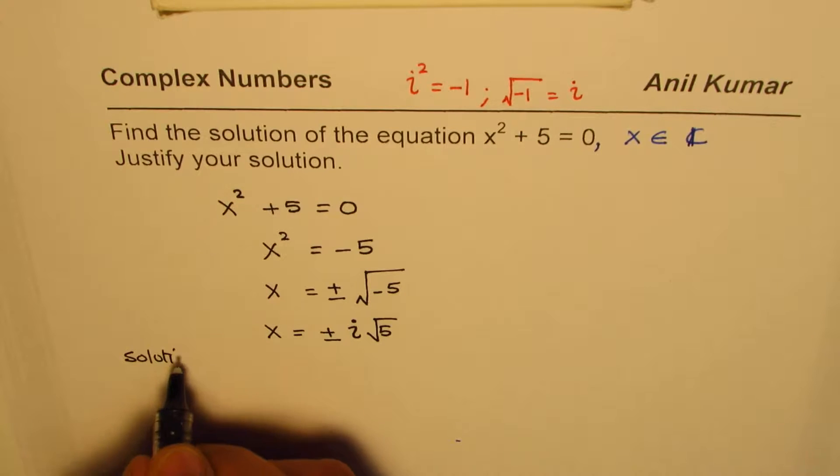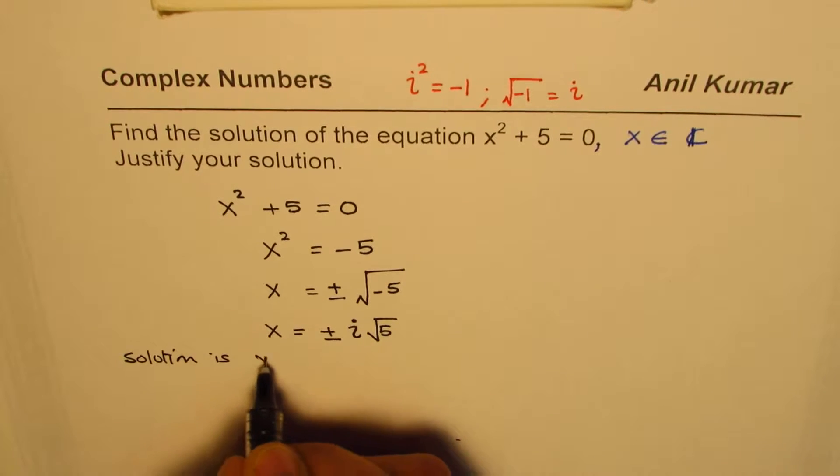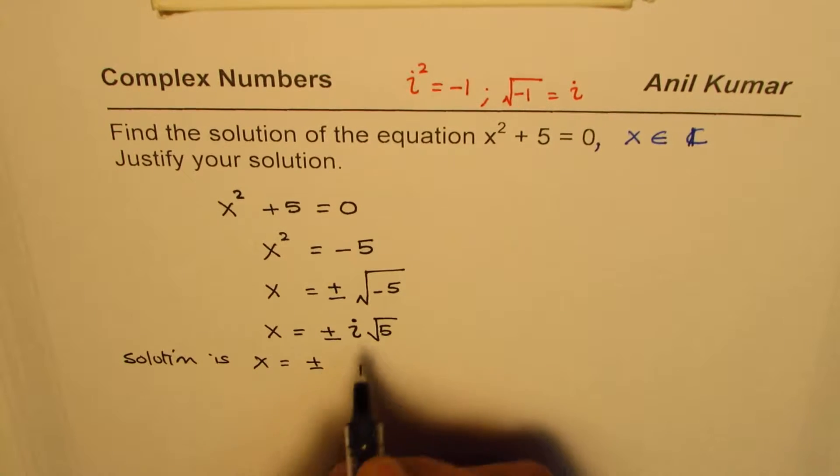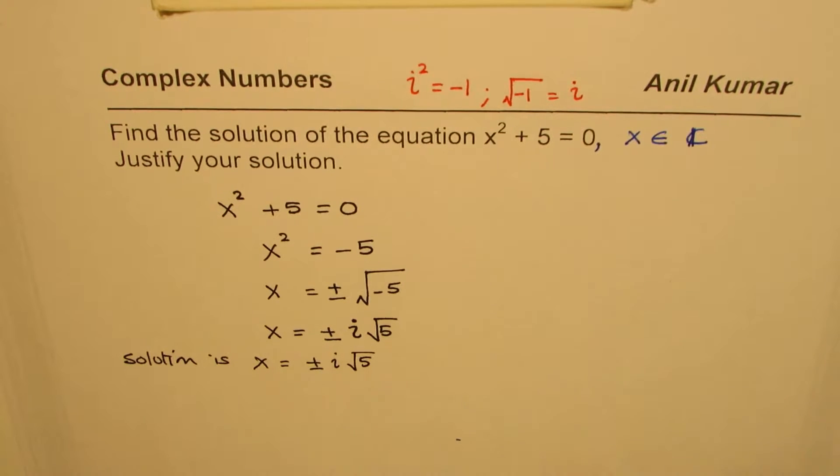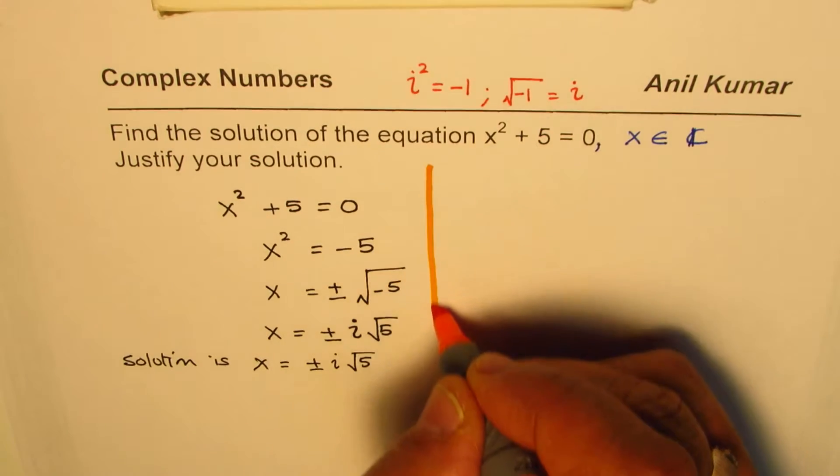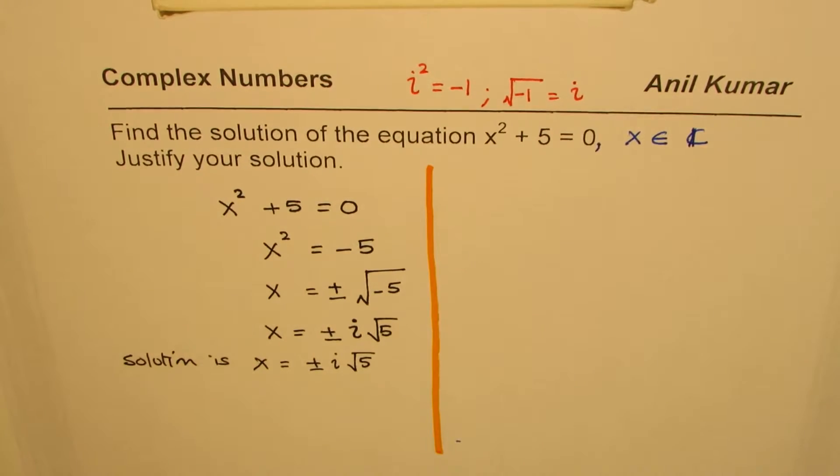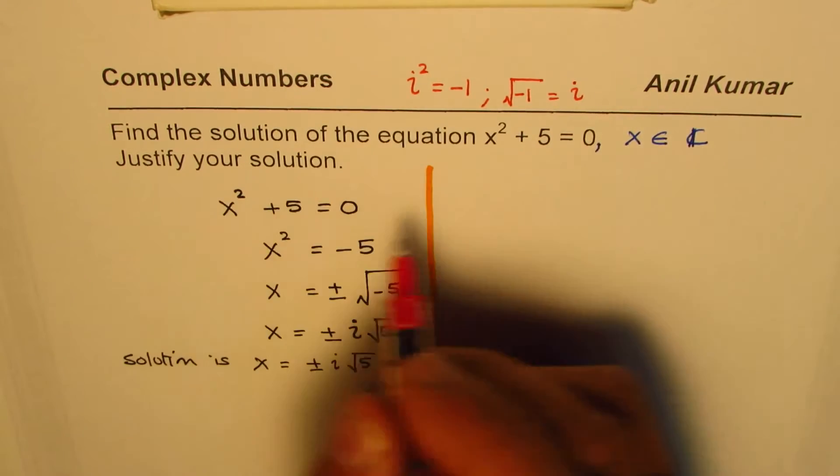So we say, solution is x = ±i√5. So there are two roots for this. Now, the second part of this question is justify your solution.